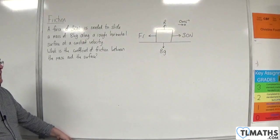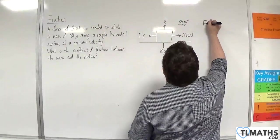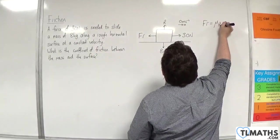What is the coefficient of friction between the mass and the surface? Well, because it's moving, we know that the friction is going to be equal to mu times R.